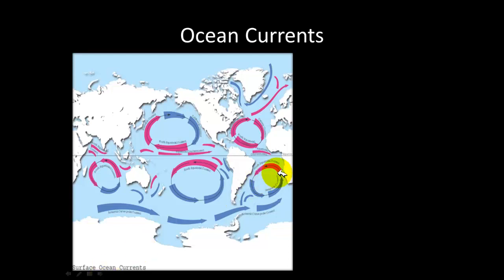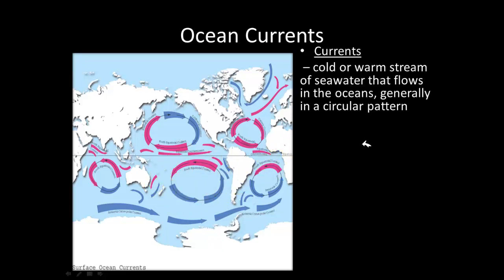Now we're discussing ocean currents. Ocean currents are basically movements of cold water, warm water, or seawater in the ocean. You might think they go back and forth like waves you see on television, but ocean currents generally flow in a circular pattern.